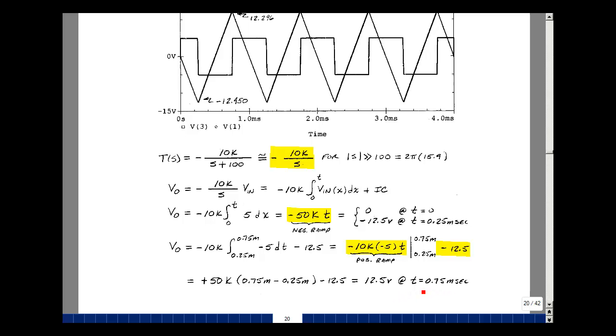Turns out to be 12 and a half volts at 0.75 milliseconds. I mean, there's three quarters of the period. So we have up on top here, we have 12.296, and we're calculating roughly 12.5, ignoring the rise and fall time.